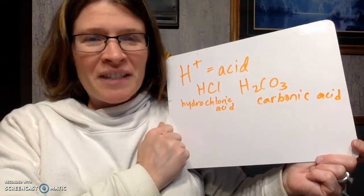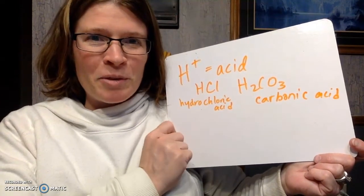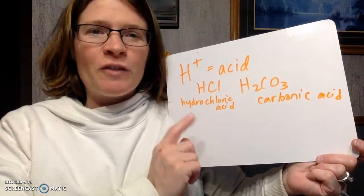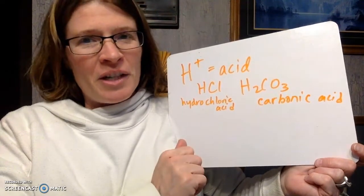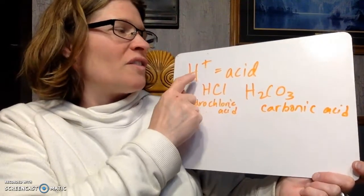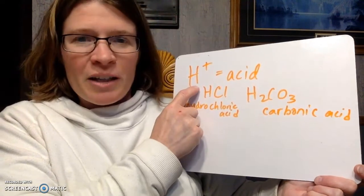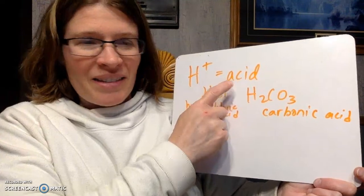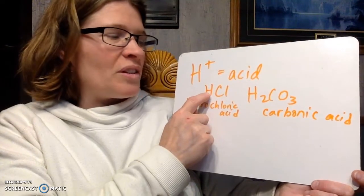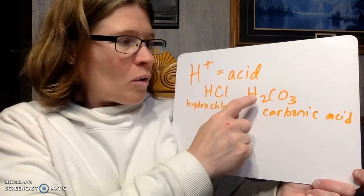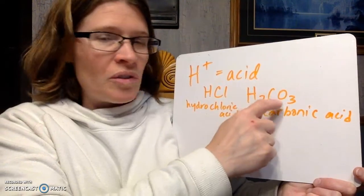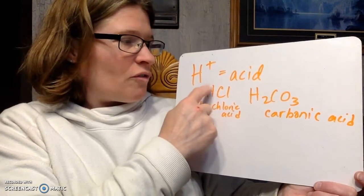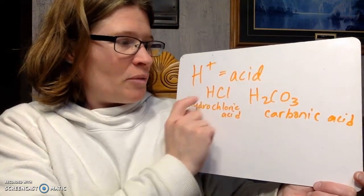This question talks about identifying the differences between acids and bases in their formulas and in their names. If it starts with a hydrogen ion, it will be an acid. Notice this one is like HCl or H2CO3 — the hydrogen is out front both times.